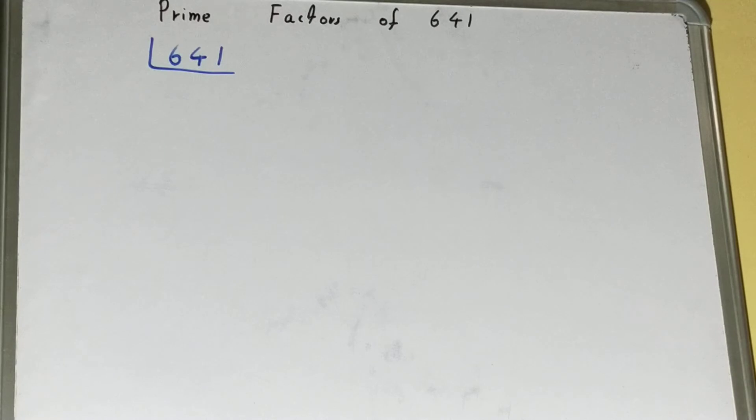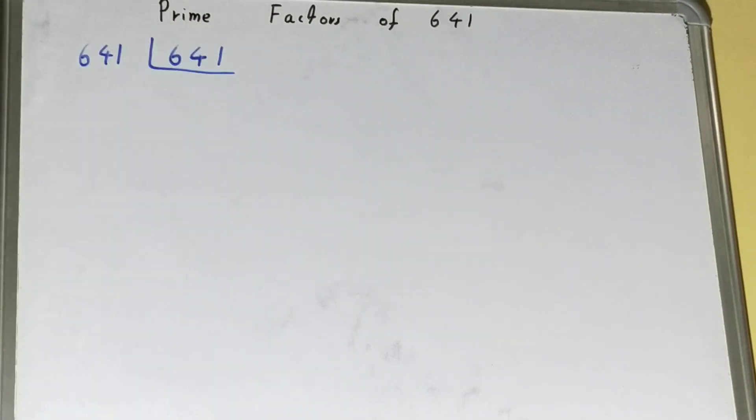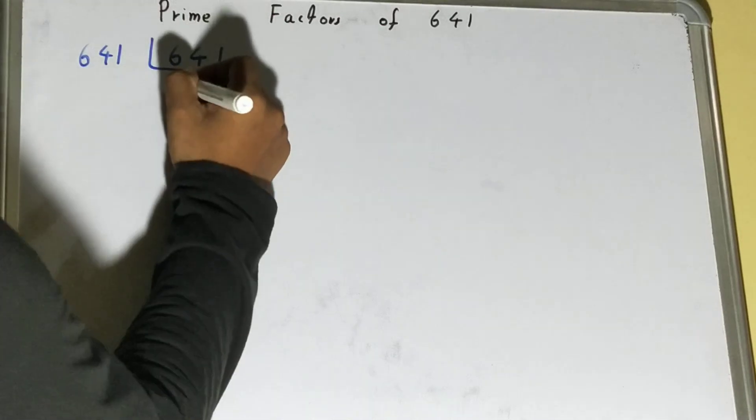Because prime numbers are only divisible by themselves, 641 is only divisible by itself. So to divide it, you need to place it on the left-hand side, and when you do so, you'll be getting one.